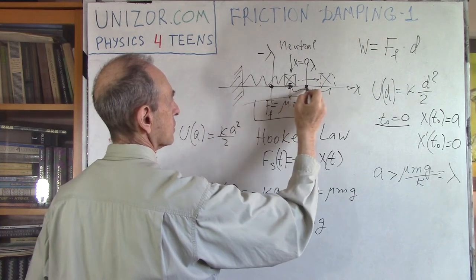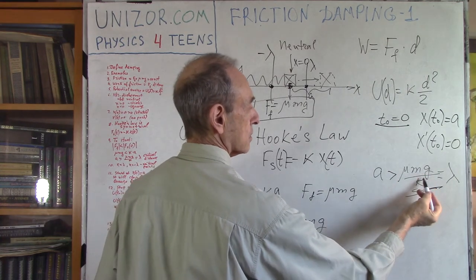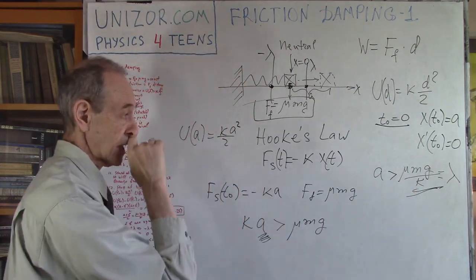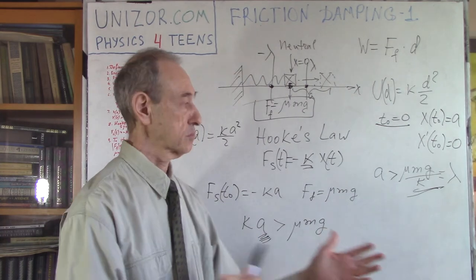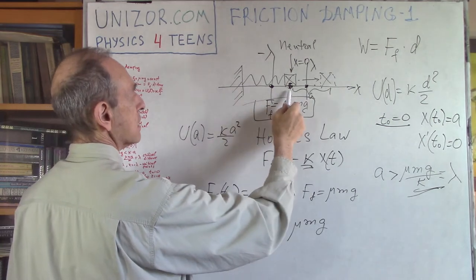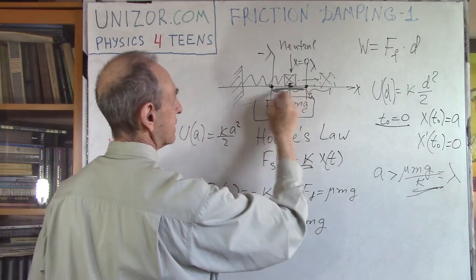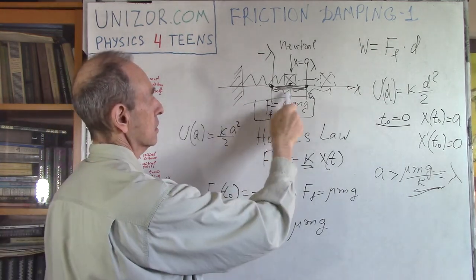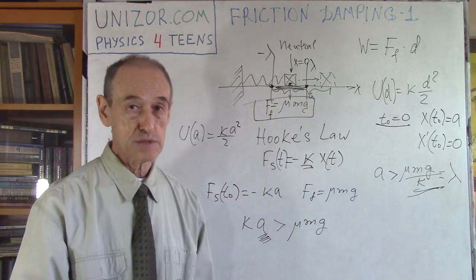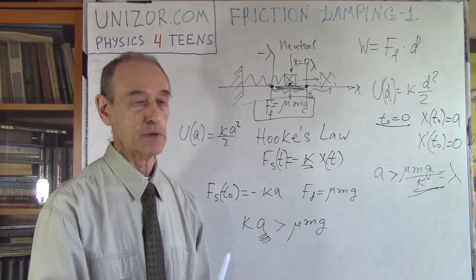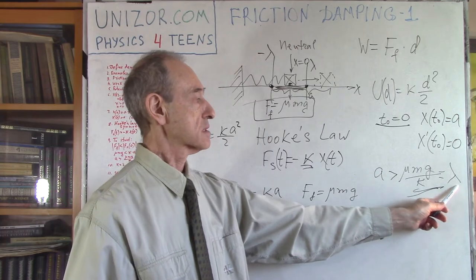These two critical points depend on the coefficient of friction, the weight, and the elasticity coefficient of the spring — basically how strong the spring is and how strong the friction is. Unless we stretch beyond the critical point, the object won't move. There is a dead interval between minus lambda and lambda. If we stretch not further than lambda and squeeze not further than minus lambda, the spring will not return to its original position.